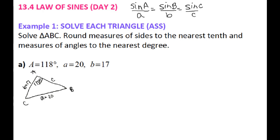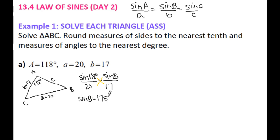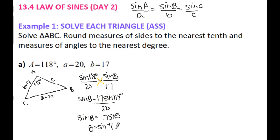For Law of Sines, you need to have an angle and its corresponding side. I have my A and A, so I can set up my first ratio: sine of 118 over 20. Since I'm given side B, I'm going to solve for angle B — sine of B over 17. Cross multiplying gives me 17 sine of 118 over 20, which equals 0.7505. Taking the inverse sine of 0.7505 gives me angle B, which rounds to 49 degrees.